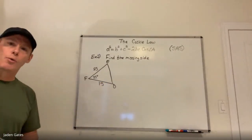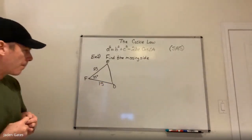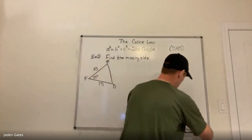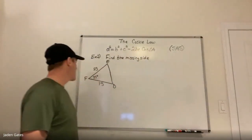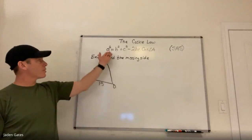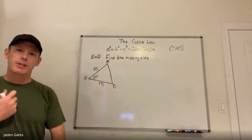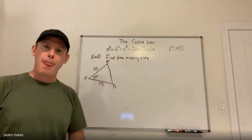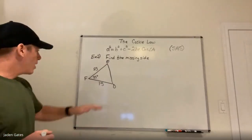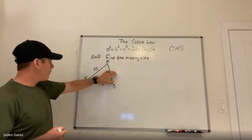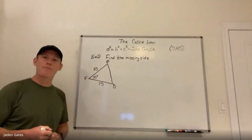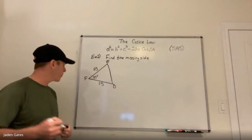I want to find the missing side. Here's a slight thing you can do: see how our formula has A's, B's, and C's in it, but this is triangle D, E, F. If I'm trying to find this side, here's what I'm going to do so it works more easily with my formula.